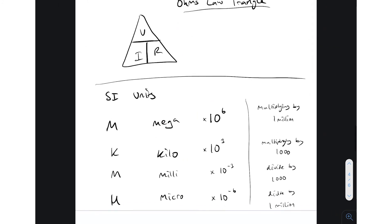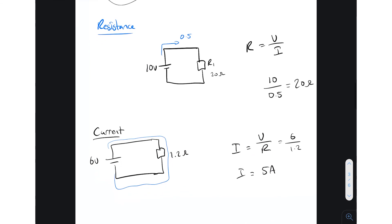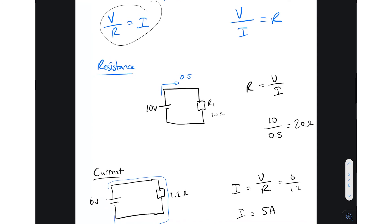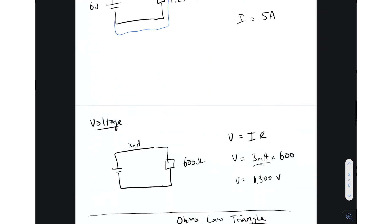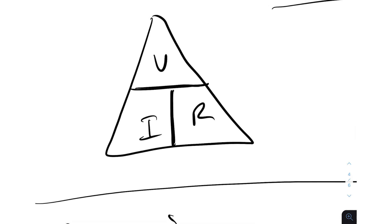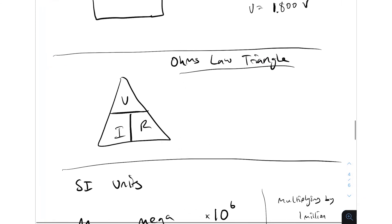So that's Ohm's Law — fairly straightforward. It gets a little complicated when you have to combine resistors, which I'll touch on in the next video. The main thing to remember: keep the Ohm's Law triangle in mind — V equals IR, R equals V divided by I, and I equals V divided by R. Cool guys, thanks for watching, and I'll see you in the next one.